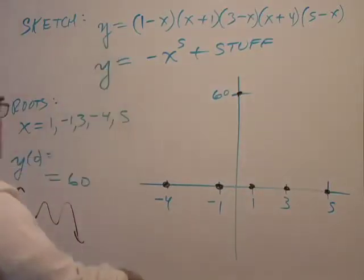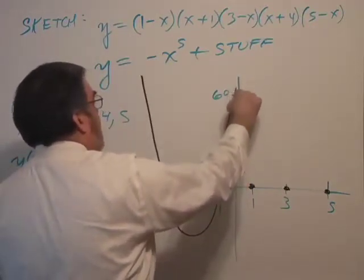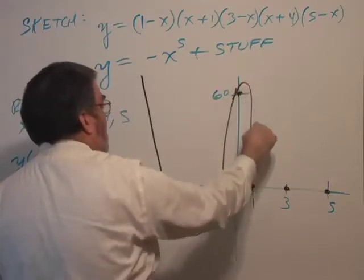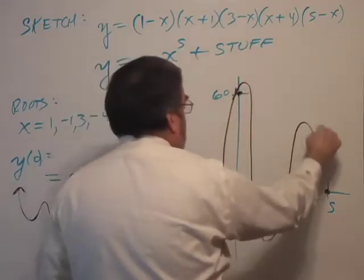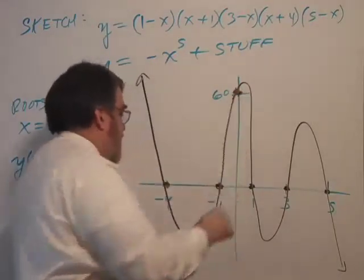So, I come down. All right. Let's see if I can do this. Comes down. Goes up. Goes through there. Comes down. Goes up. Comes down. There we go. So, that's a fair sketch, I think.